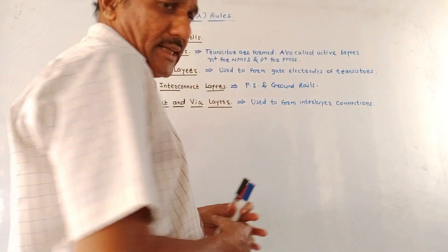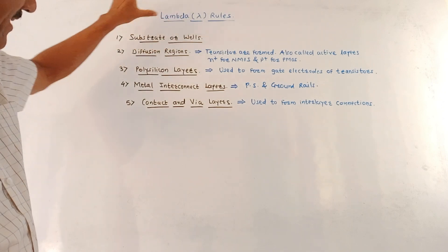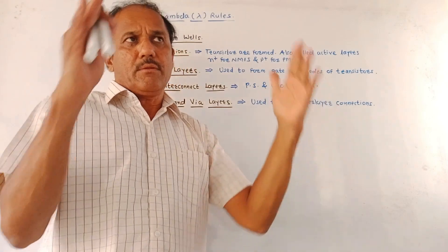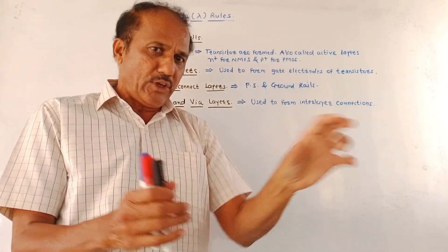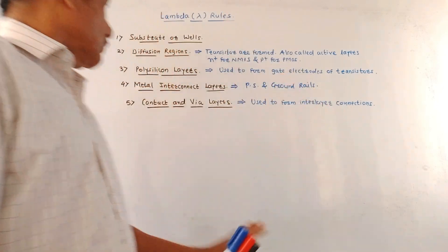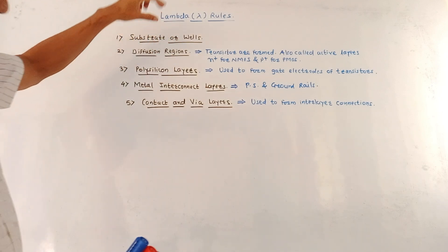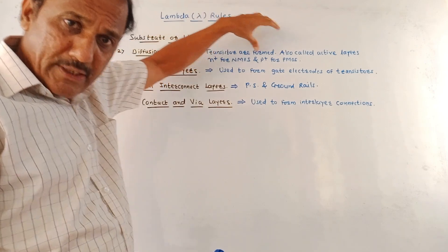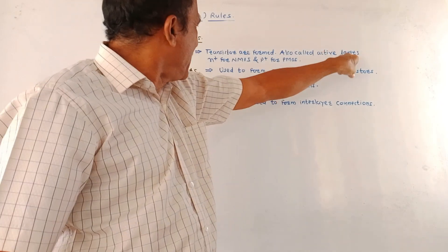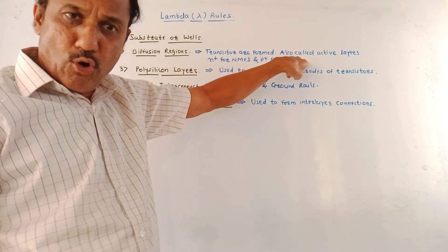The design rules are based on different components. First is the substrate or well — in case of N-MOSFET, a P-type substrate or P-type well is used, whereas for P-MOSFET, an N-type substrate is used. Then there are diffusion regions, where transistors are formed. These diffusion regions are also called active layers — N-plus for N-MOSFET and P-plus for P-MOSFET.